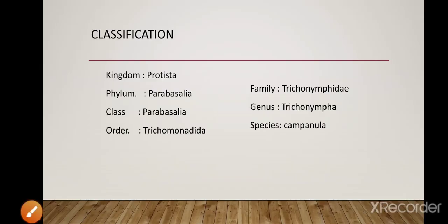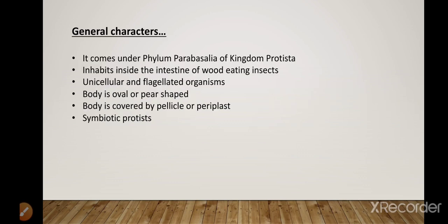The classification of Trichonympha: kingdom Protista, phylum Parabasalia, class Parabasalia, order Trichomonadida, family Trichonymphidae, genus Trichonympha, species campanula. General characters: it comes under phylum Parabasalia of kingdom Protista, inhabits inside the intestine of wood-eating insects such as termites and wood roaches, and is a unicellular flagellated organism with an oval or pear-shaped body.